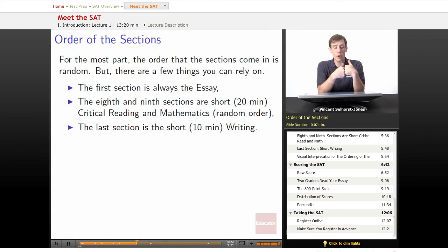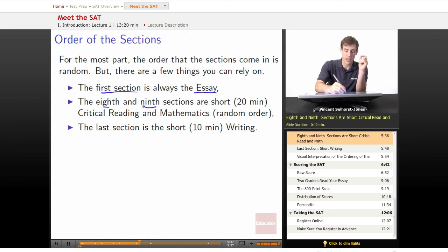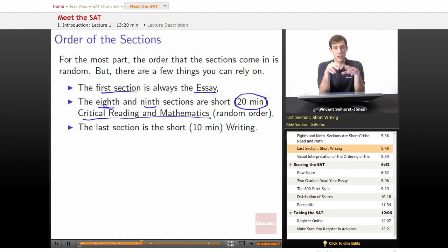Order of the sections. For the most part, the order that the sections come in is random, but there are a few things you can rely on. The first section is always the essay. That's always going to be the case. You'll always start off with an essay when you're taking the SAT. Also, the eighth and ninth sections are going to be critical reading and mathematics. You don't know what the order is going to be, but you do know that they're going to be shorter than normal. They're going to wind up being 20 minutes long. And finally, the last section, the tenth section, is always going to be the short 10-minute writing section.